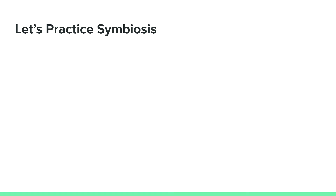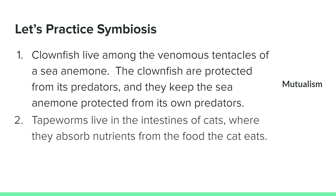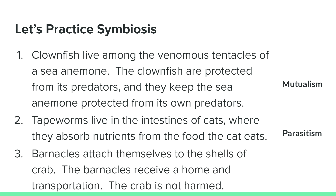Let's see what we remember. There will be a multiple choice question after each scenario — give yourself time to think and then see if you were right. Clownfish live among the venomous tentacles of a sea anemone. The clownfish are protected from predators and they keep the sea anemone protected from its own predators. That's right — mutualism, a plus-plus symbiosis. Tapeworms live in the intestines of cats where they absorb nutrients from the food the cat eats. That's parasitism, a plus-minus symbiosis. Lastly, barnacles attach themselves to the shells of crabs. The barnacle receives a home and transportation, and the crab is not harmed. Commensalism — a plus-zero symbiosis.